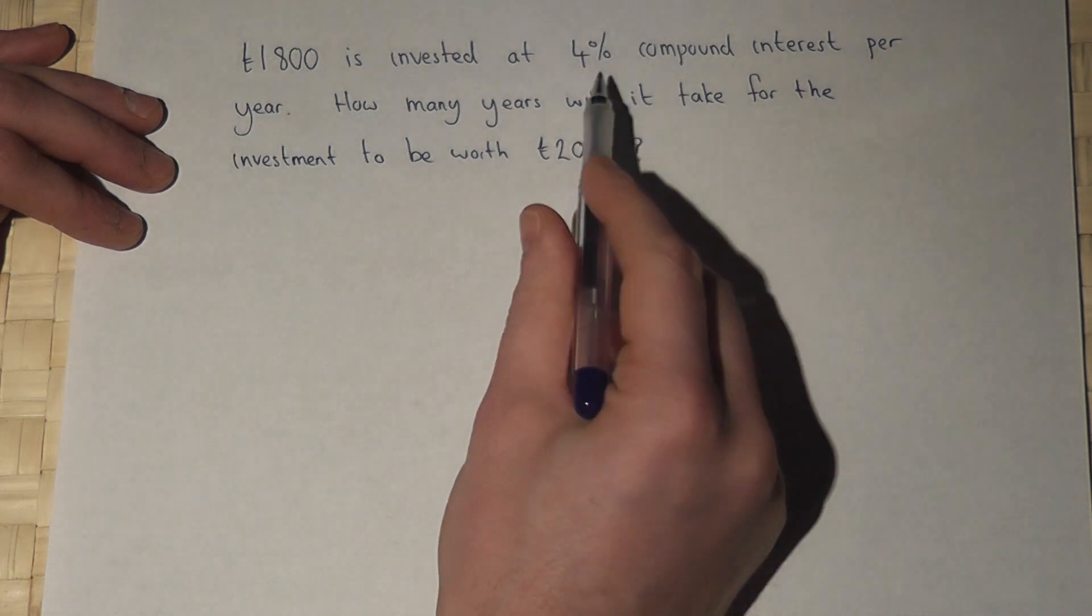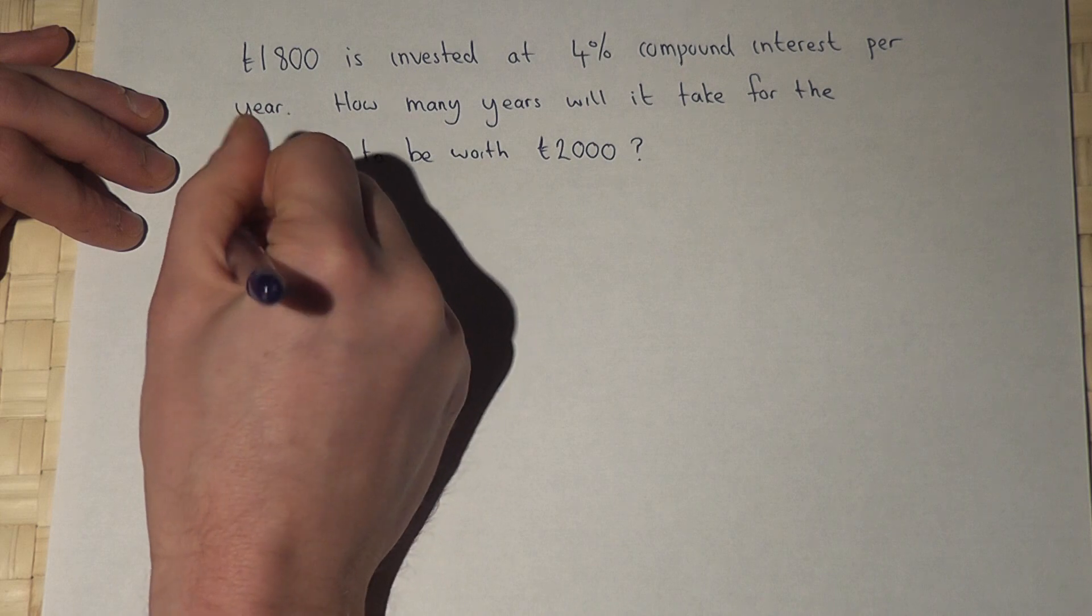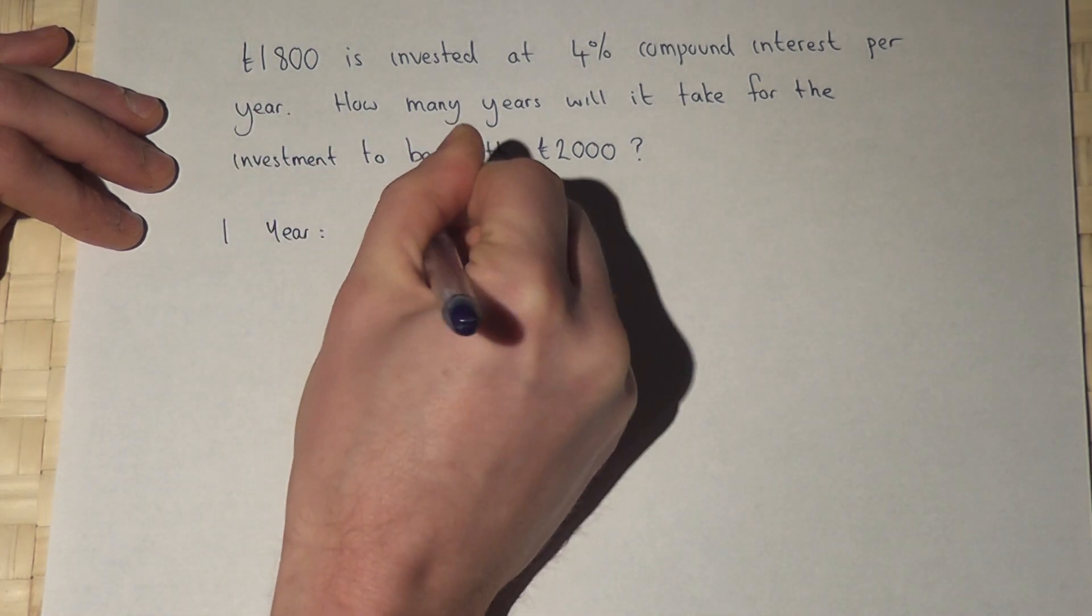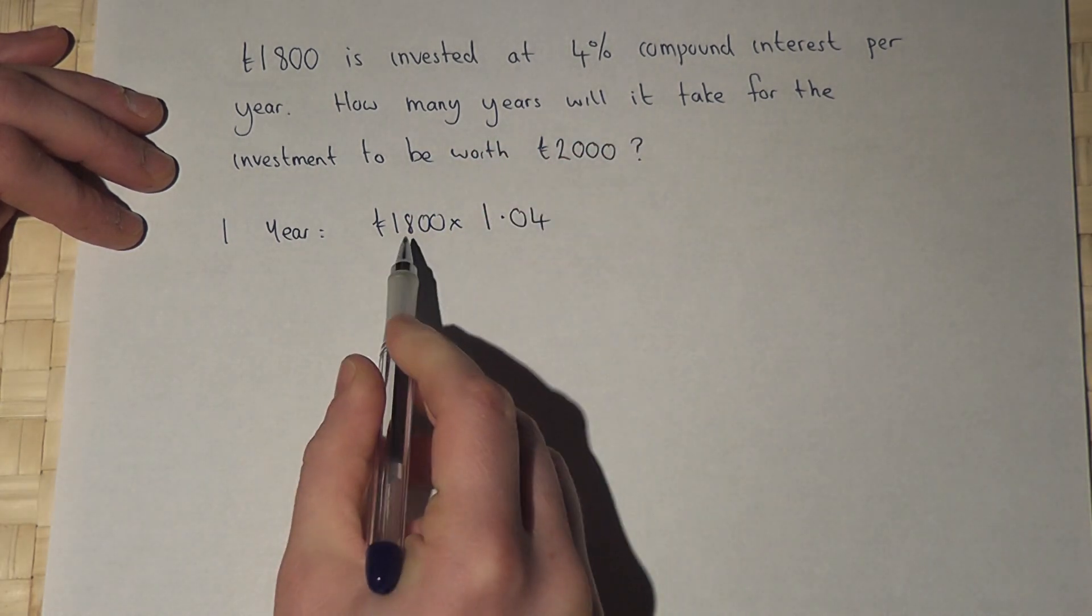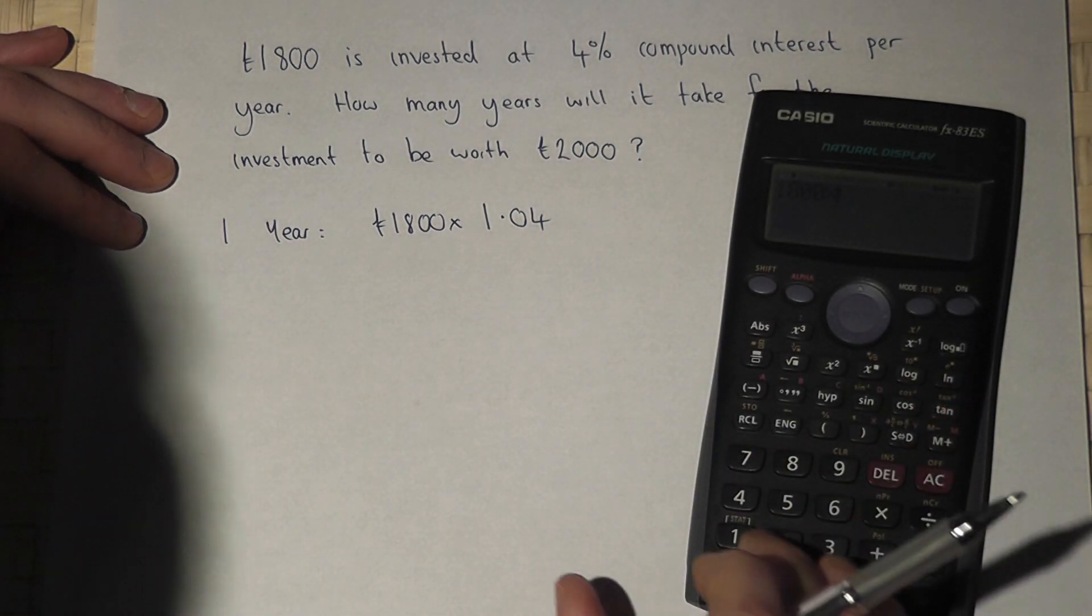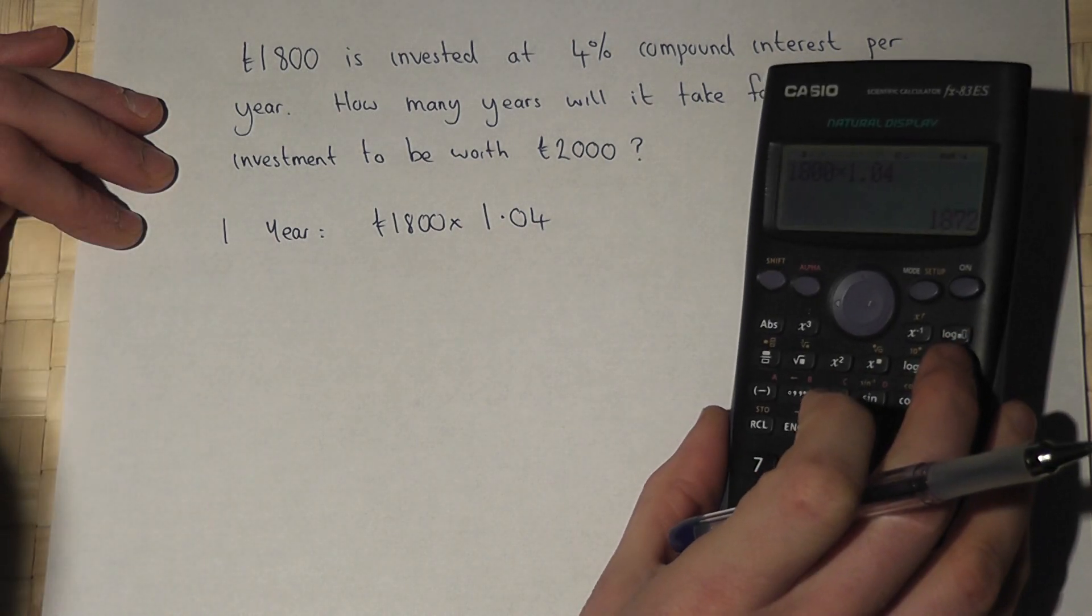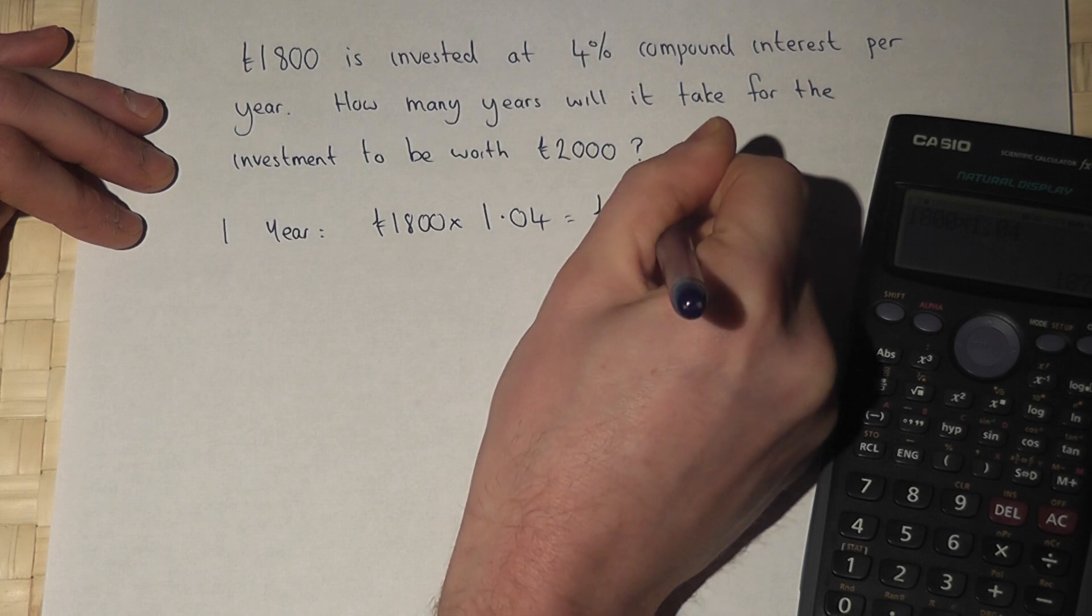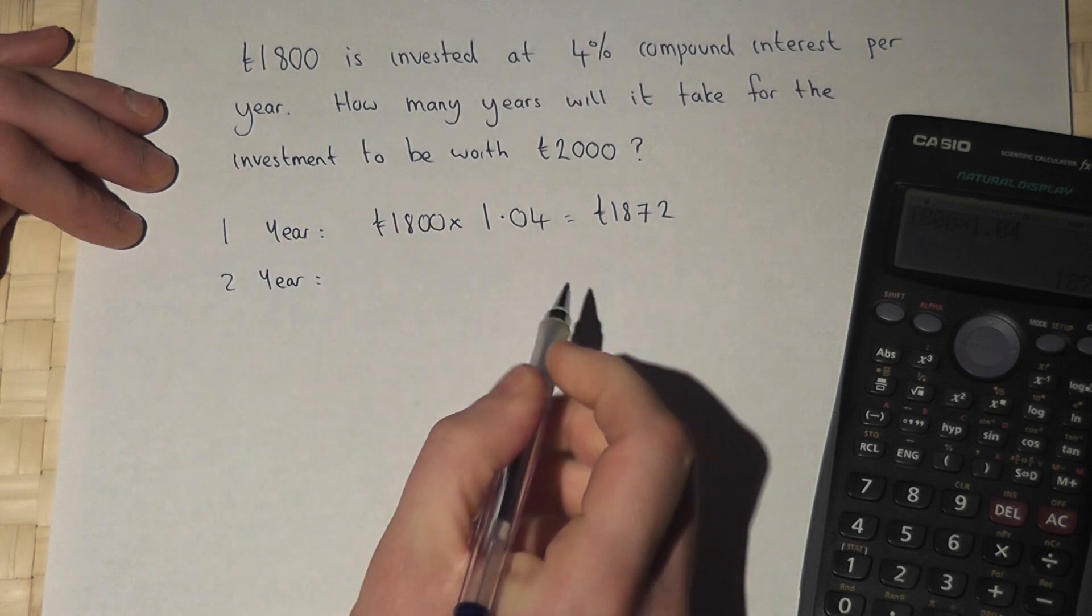To increase by 4%, we can do this on a calculator quite quickly. After one year, the amount will be £1,800 times by 1.04. If I times by 1.04, it gives me the new amount. After one year there is £1,872, and we must keep on doing this until it rises to over £2,000.